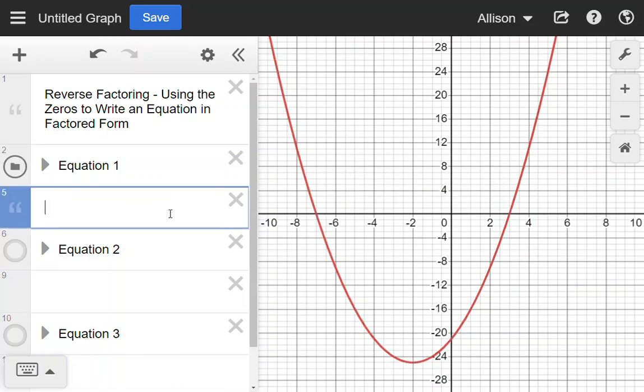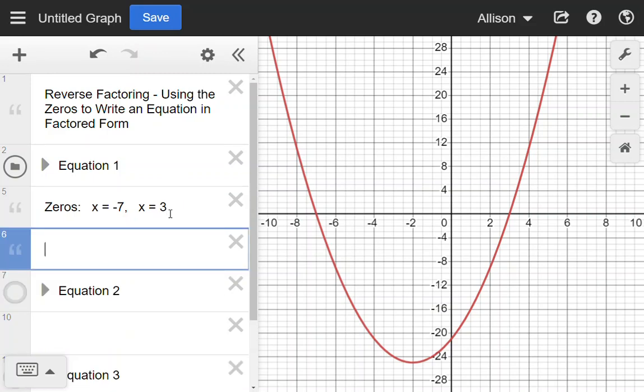So the zeros are at x = -7 and x = 3. Now if I'm going to use these zeros to find the factors, then I want to get these little equations here equal to zero. So if I start with the first one, x = -7, if I add 7 to both sides, I will get zero on the right hand side. So I get x + 7 = 0. That's going to be one of my factors.